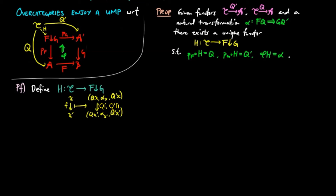Since alpha is a natural transformation, this is a well-defined functor. Then we see that pfh is equal to q, pgh is equal to q prime, and phi h is equal to alpha.